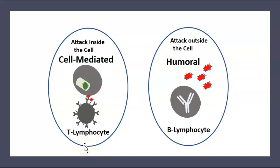T lymphocytes, however, don't secrete antibodies. They depend on the thymus, which is located in between both lungs. It's a gland that's part of the lymphatic system and the endocrine system, and they act via the cell using cytotoxins.